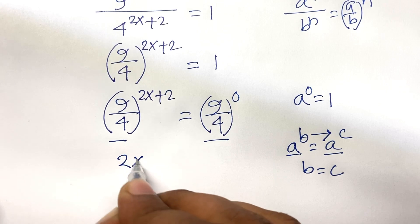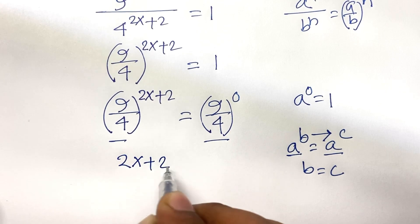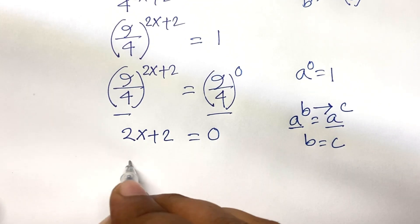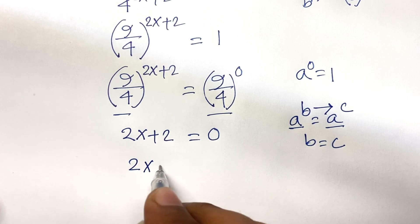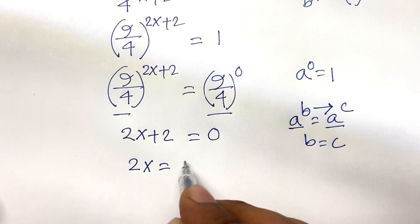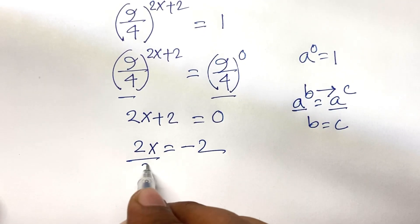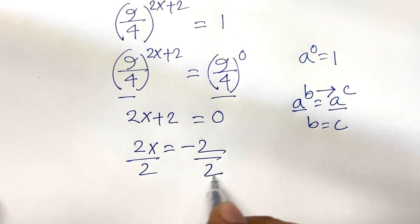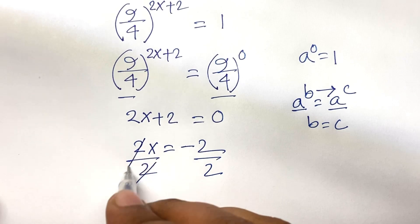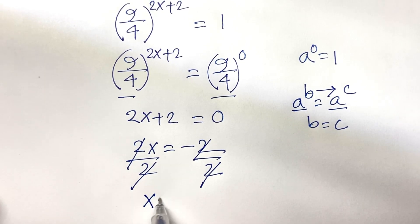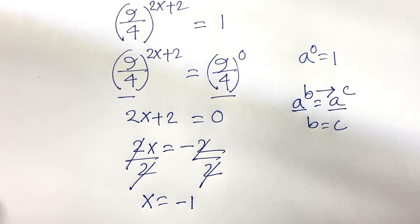So 2x plus 2 equals 0, which gives 2x equals minus 2. I divide both sides by 2, the 2s cancel, so x equals minus 1. This is our answer.